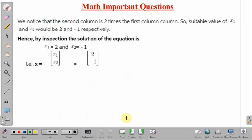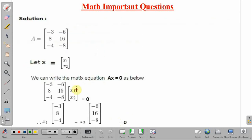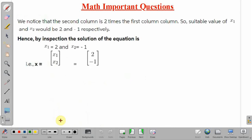Now if you see these two, the first column and second column, all the elements of the second column are two times the elements of the first column. For corresponding elements, we can say minus 6 equal to 2 into minus 3. Similarly, 16 equal to 2 into 8, and this minus 8 equal to 2 into minus 4. So the second column is two times the first column.